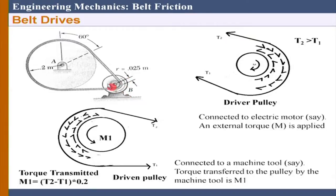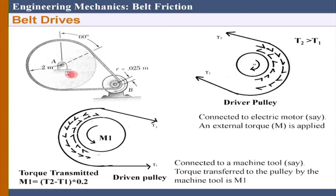The problem is like this: we have a motor. Let us say B has a motor, so that means it is a driver drum - this is my driver pulley and this is the driven pulley. Ultimately the motor is applying some torque, that torque is being transmitted to this pulley, and in this pulley some machine tool is connected which is rotating. Ultimately the motor is helping that machine tool to rotate in the same direction.